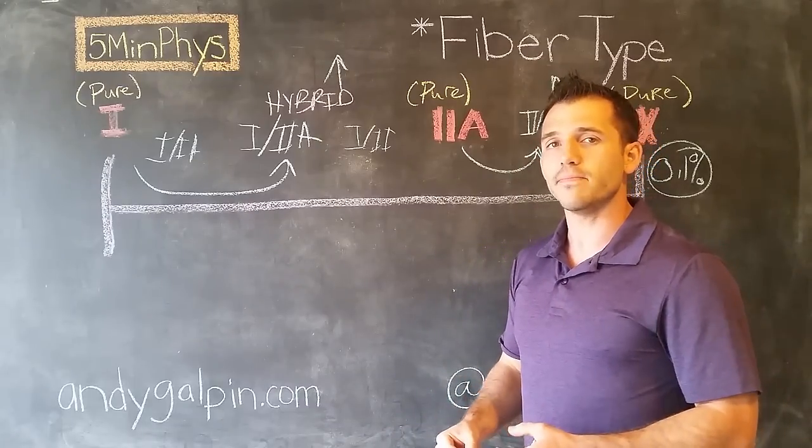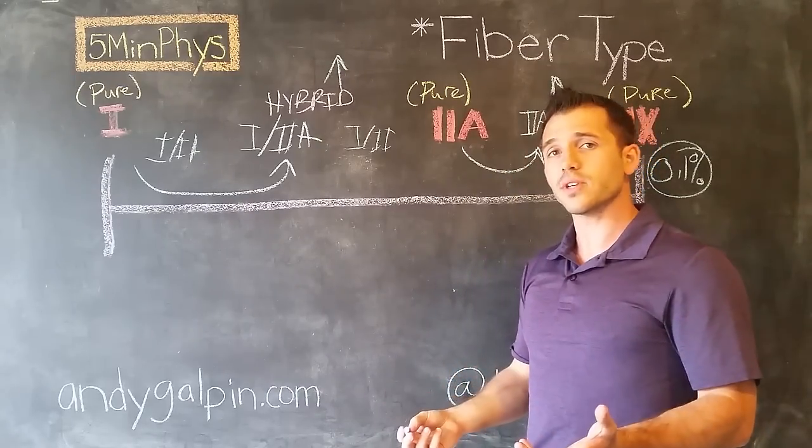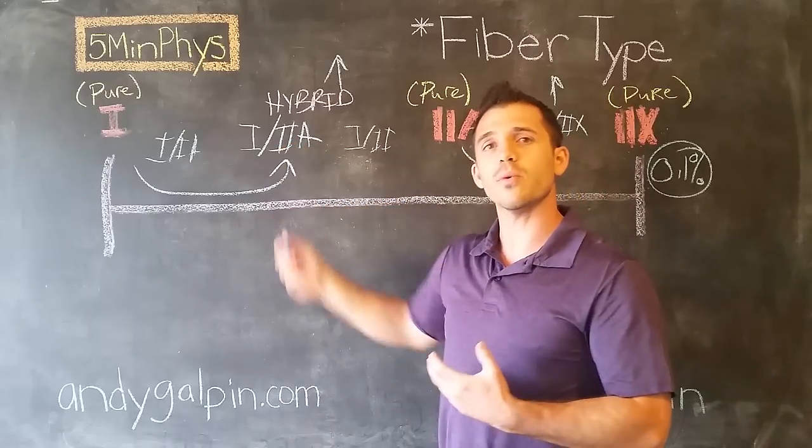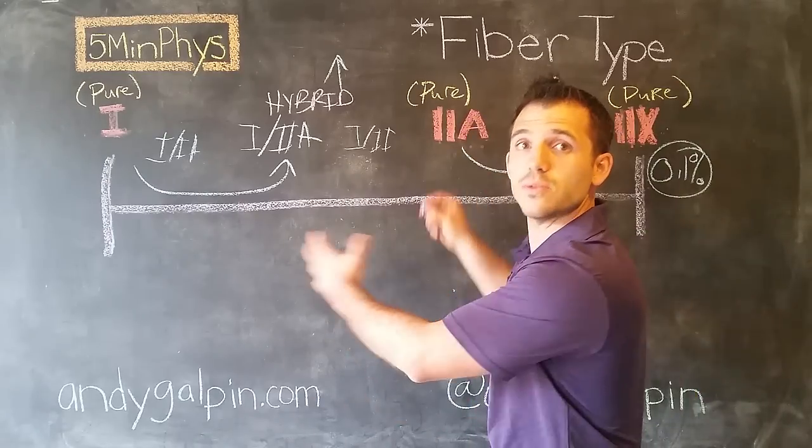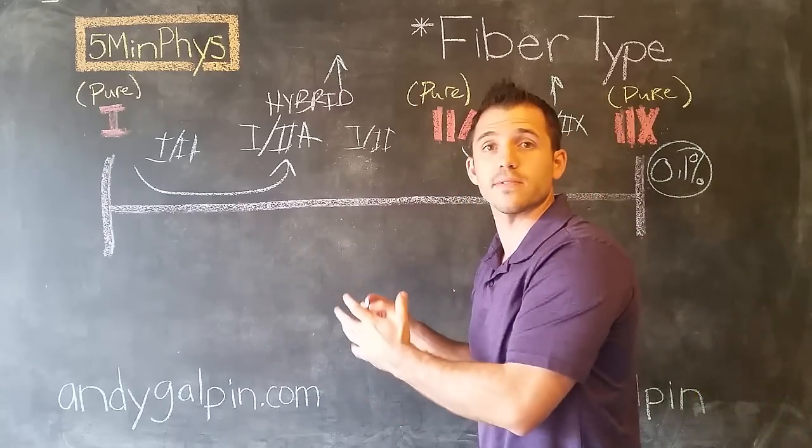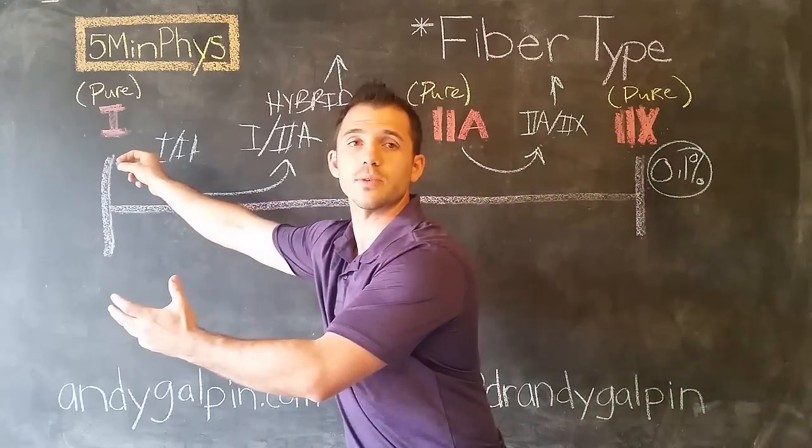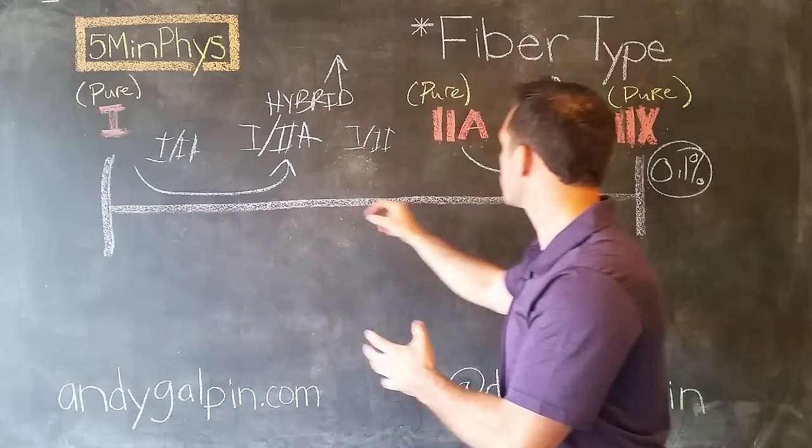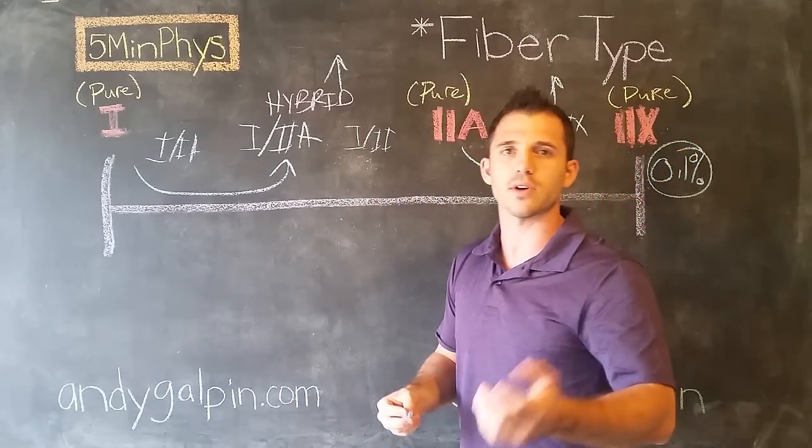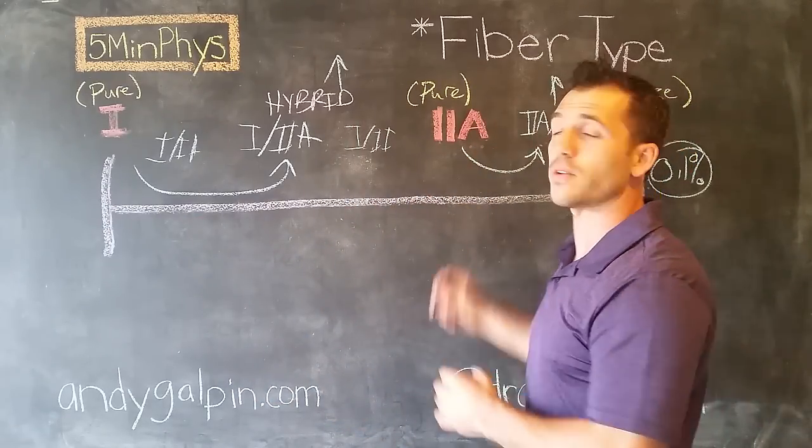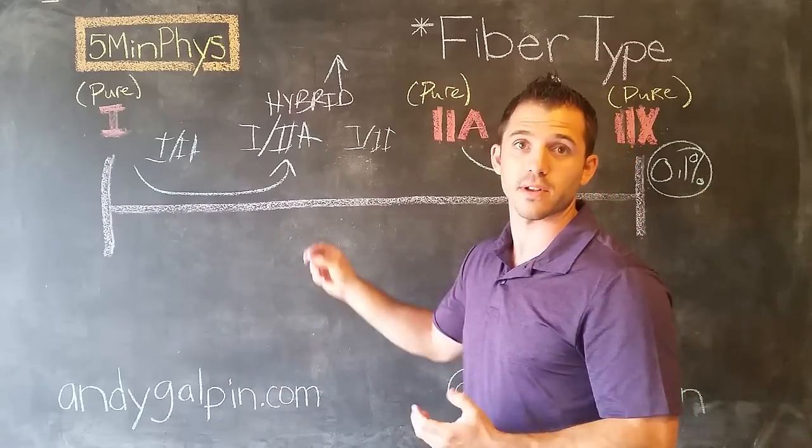I could guess, but maybe I'll save that for another video. The quick answer is, potentially, it's sort of saying, you know what, you aren't using us, so you don't know what you want us to do. So we're going to hang out in the middle until you tell us how you want us to function. You want us to be very fatigue resistant, we'll become a type 1. You want us to be very fast, we'll become a type 2. I don't know, that's a guess, and we can talk in more detail later in one of our other segments, maybe our 25 or 55 minute physiology section.